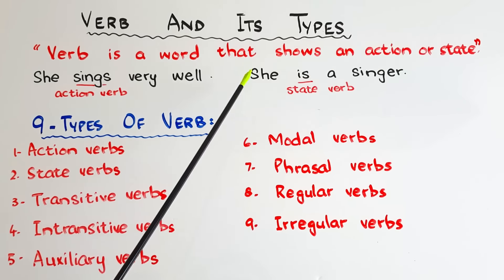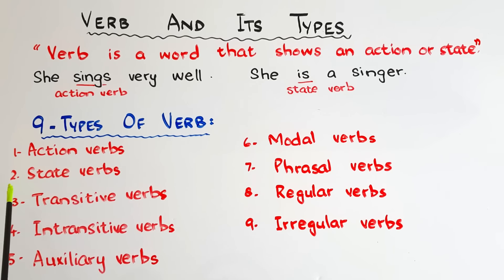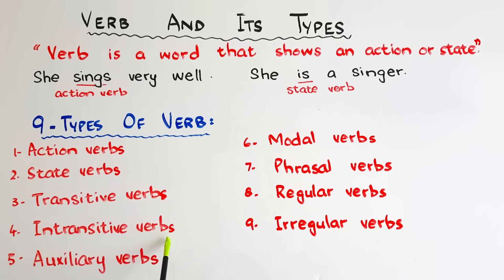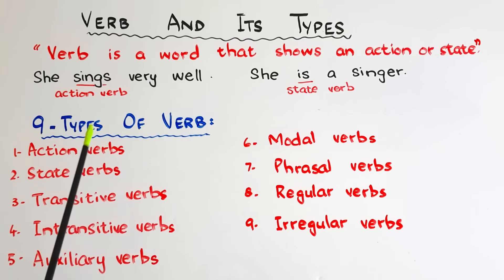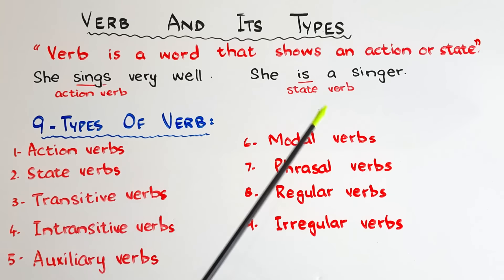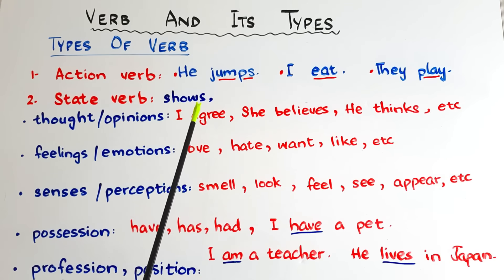Let's move forward and see what are the nine types of verbs. The first is action verb, then state verb, transitive verbs, intransitive verbs, auxiliary verbs, modal verbs or modal auxiliary, phrasal verbs, regular verbs, and irregular verbs. Most of these types are quite simple and you will get them very fast.